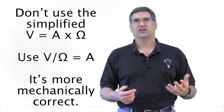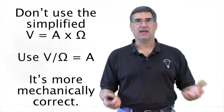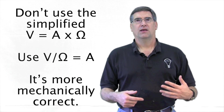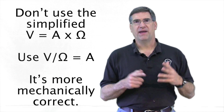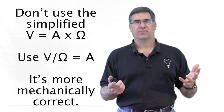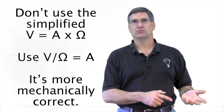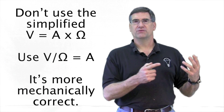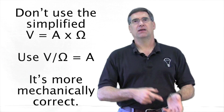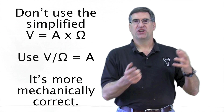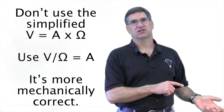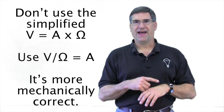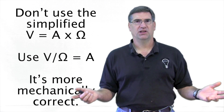What makes more sense, in my opinion, is using the equation volts over ohms equals amps. And there's a very important reason for that: volts and ohms make amps. The true relationship of Ohm's Law is that voltage and resistance make amperage. If we change voltage, we change amperage. If we change resistance, we change amperage. That's the mechanical relationship.